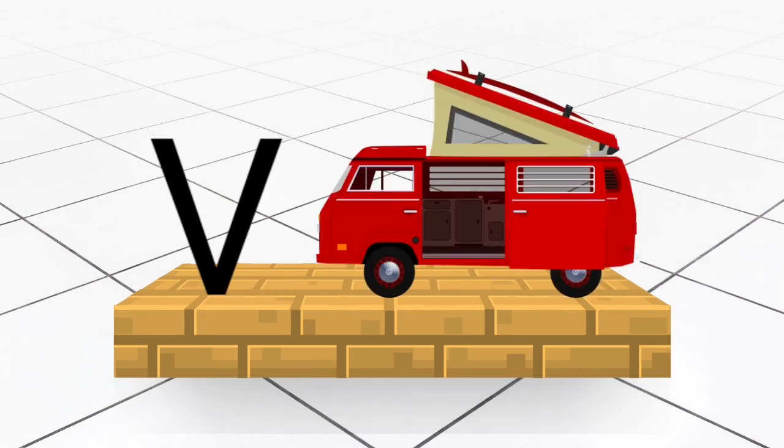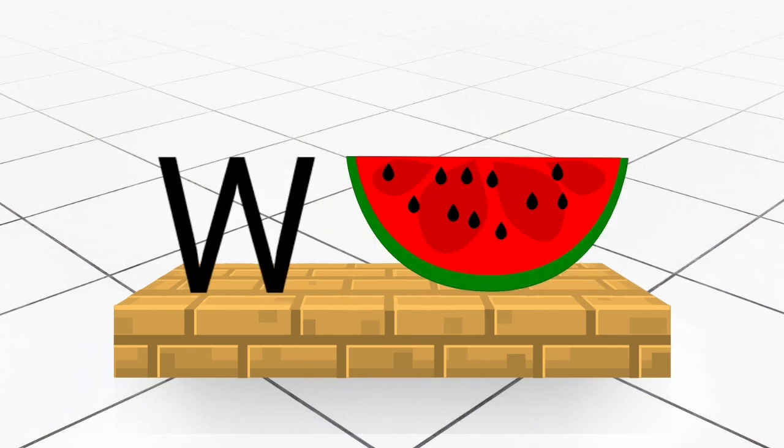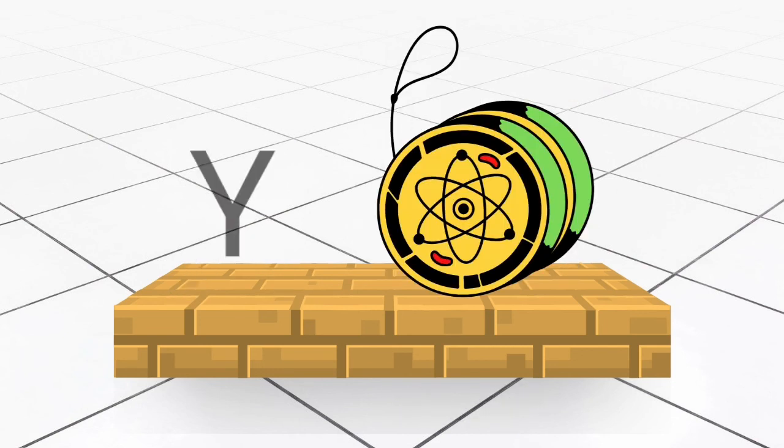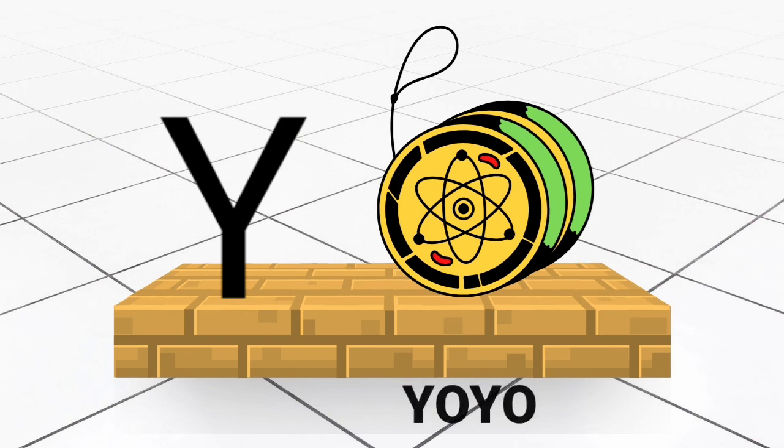V for Van, W for Watermelon, X for X-Ray, Y for Yoyo.